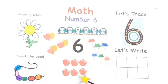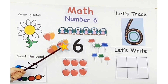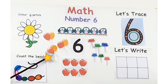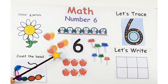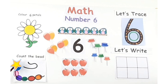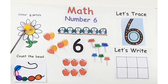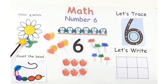Now let's count the apples: 1, 2, 3, 4, 5, 6 — six apples. I hope you all are counting along with me. Now let's count the balloons: 1, 2, 3, 4, 5, 6 — six balloons. Now it's time to count the beads. There are some beads in the string. Let's count how many beads: 1, 2, 3, 4, 5, 6 — six beads. Now it's time to color the petals — color six petals. We have to color only six petals on the flower.